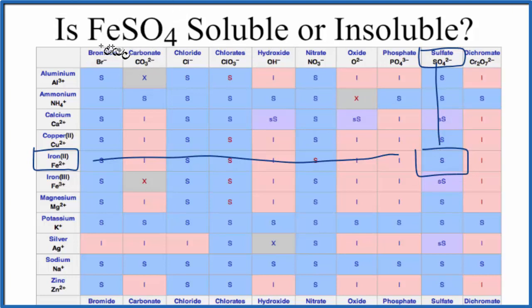If we put some solid iron 2 sulfate in water, it'll dissolve, dissociate into its ions. We'll have the Fe2 plus ion, and then we'll have this SO4 2 minus ion. And they'll be aqueous. They'll be dissolved in water. We'll put a little AQ after them to show that.